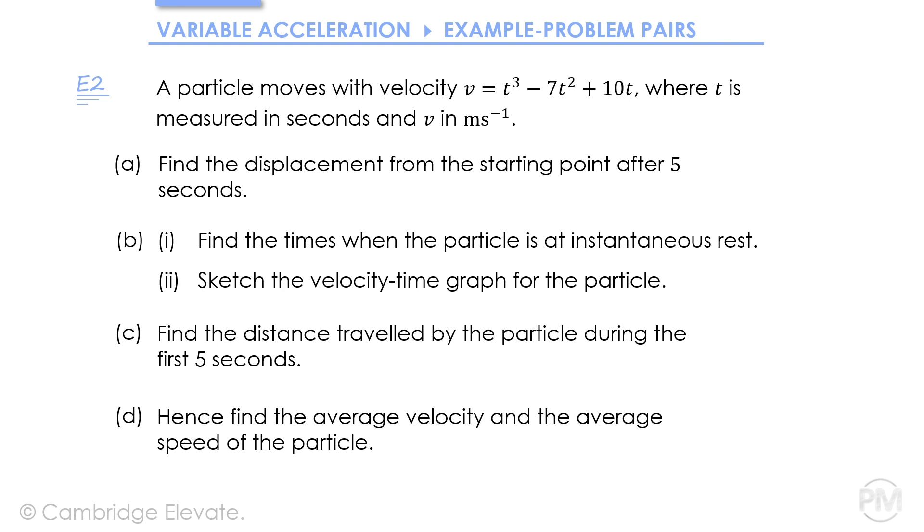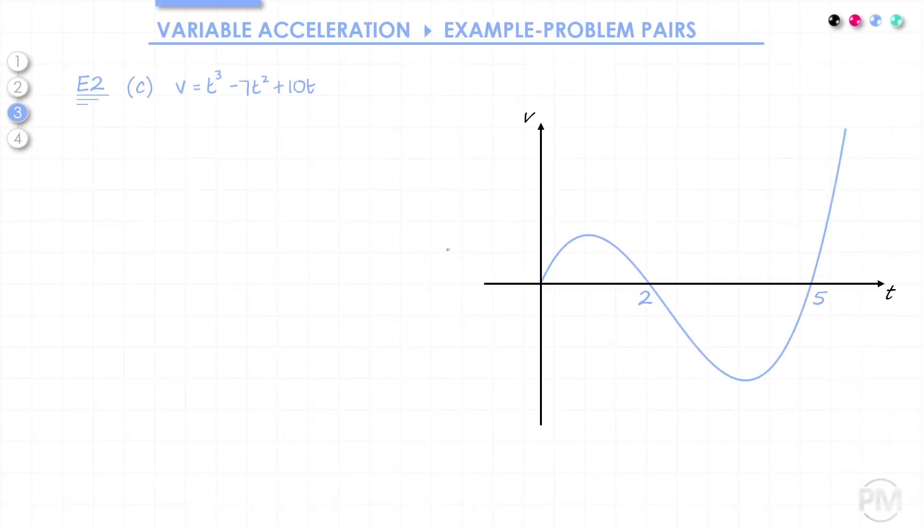Moving on to part C, we need to find the distance travelled by the particle during the first 5 seconds. In this part, we're looking to find the distance as opposed to the displacement that we found in part A. It's still over the first 5 seconds. Recall that in part A, we found the displacement between t equals 0 and t equals 5, and to do that, we simply did an integral between 0 and 5. It didn't matter that some of the curve was above the x-axis, and some of the curve was below the x-axis.